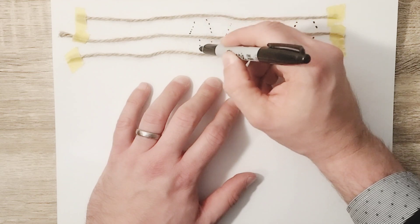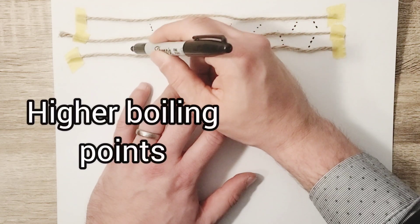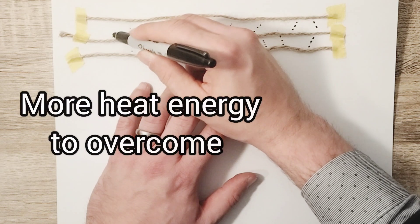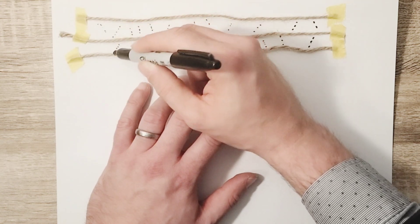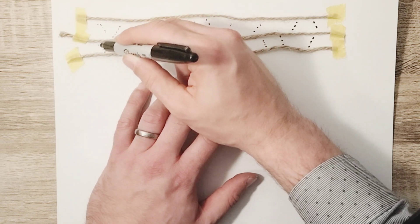This results in long-chain molecules generally having higher boiling points as more heat energy is required to overcome these many London forces forming along these chains.